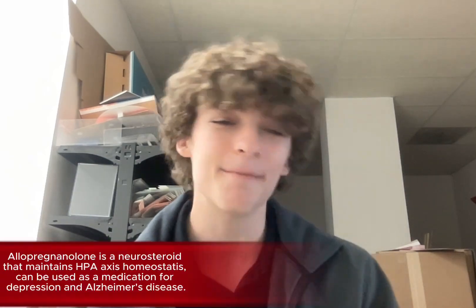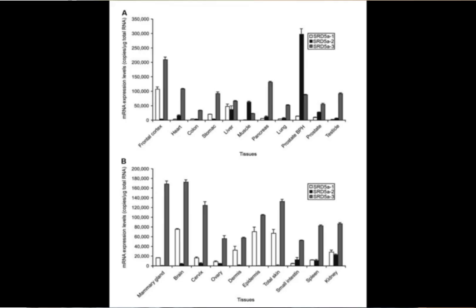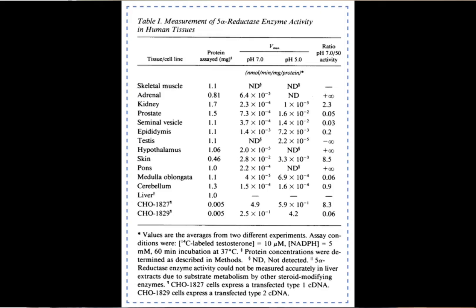The 5-alpha reductase enzyme doesn't only convert testosterone to dihydrotestosterone — there are also other syntheses, such as pregnenolone to allopregnanolone, which is a potent neurosteroid for all-around well-being and anti-anxiety. There are also a couple of different isoenzymes of 5-AR. There's type 1, type 2, and type 3. Finasteride inhibits type 2, which is usually found in things like the scalp and the prostate. Type 1 is typically found in the brain, but also in the liver and various other tissues.